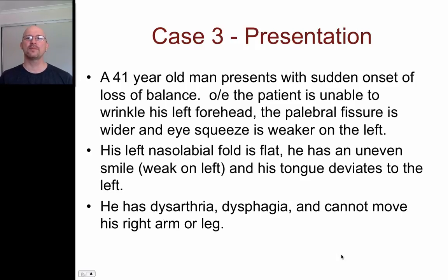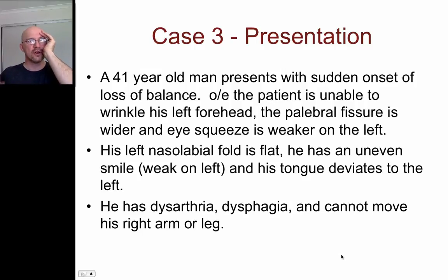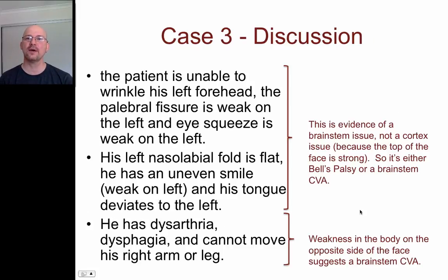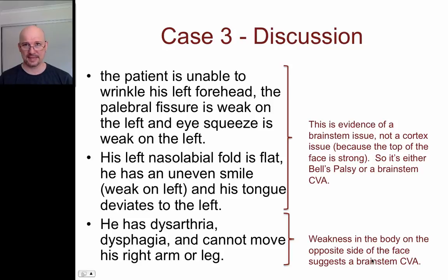Case three: a 41-year-old male with sudden onset loss of balance. On examination, he is unable to wrinkle his left forehead — weak left forehead, weak left face — plus dysarthria, dysphagia, and inability to move the right arm or leg. So we have upper and lower face involvement, which points to brainstem rather than cortex — either a brainstem CVA or Bell's palsy. But he also has body weakness, and since the facial nerve only innervates the face, this must be more than just the facial nerve. This has to be a brainstem CVA.